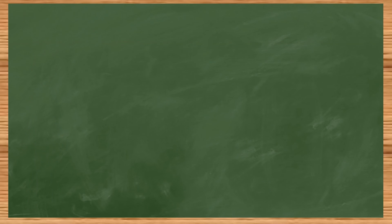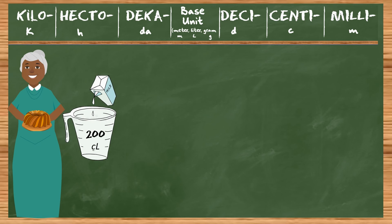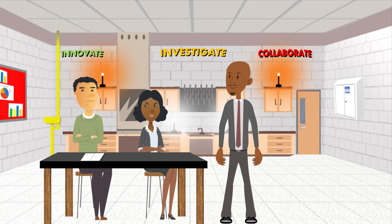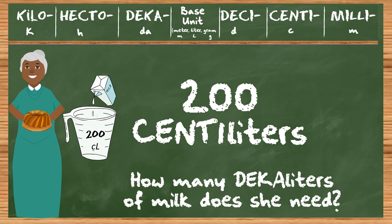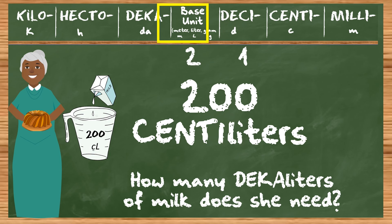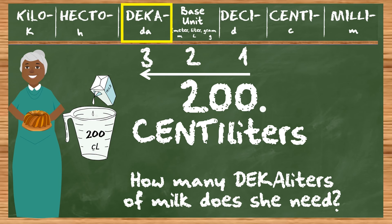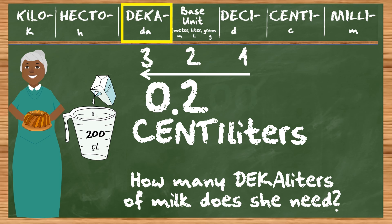Your grandma's pound cake recipe requires 200 centiliters of milk. How many decaliters would that be? No one's grandma measures milk in decaliters. My grandma uses cups. So where are we starting? We're starting in centiliters. Are we moving to deci or are we moving to deca? Deca — I almost got confused, they look similar. So let's move our decimal. If you don't see the decimal, remember that it's always at the end of a whole number. 0.2 decaliters of milk.